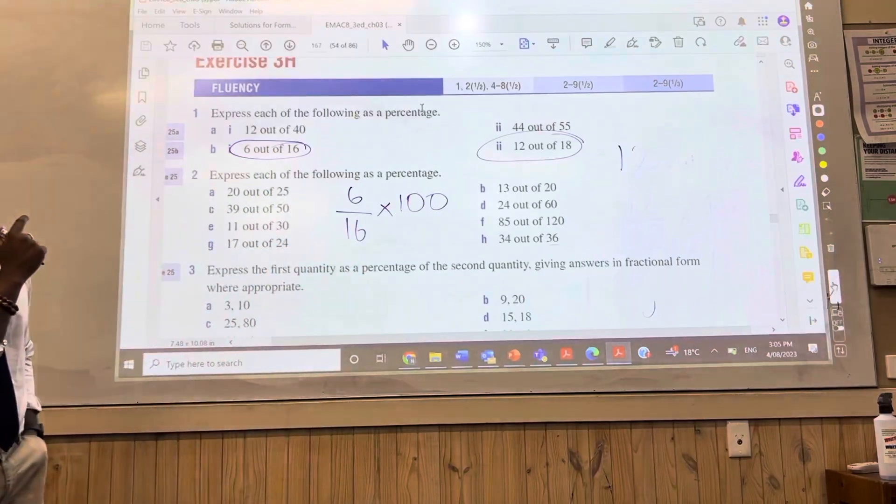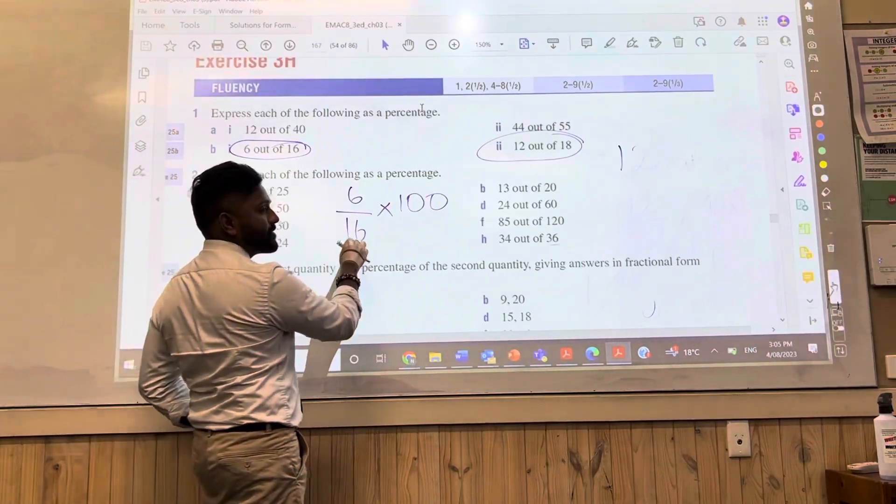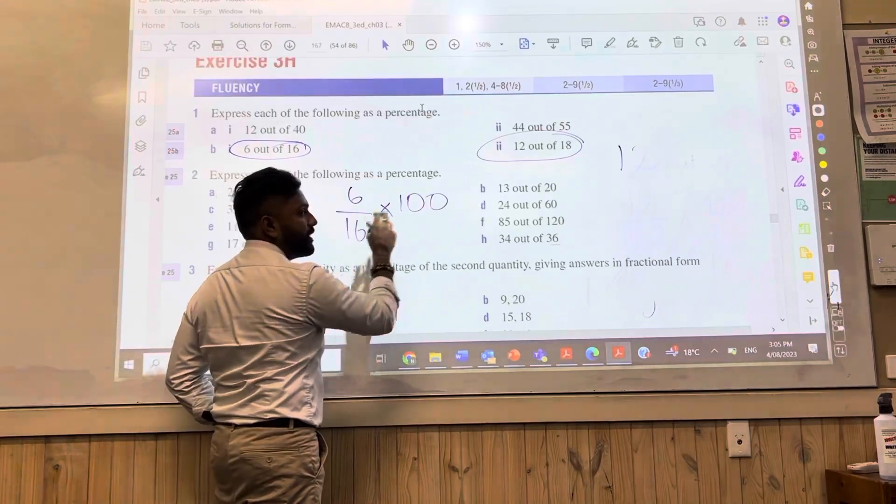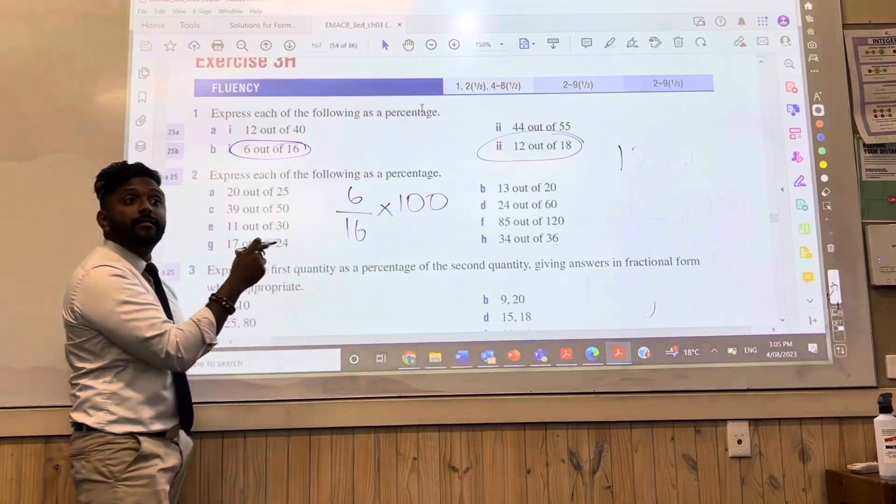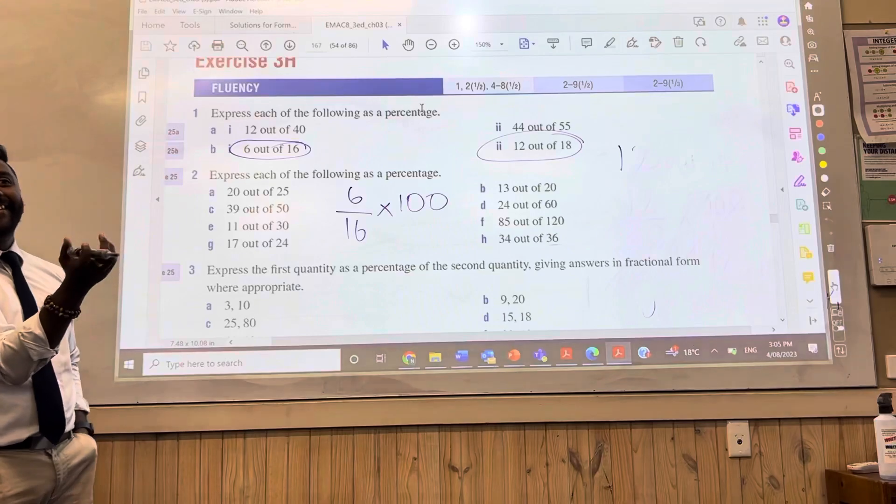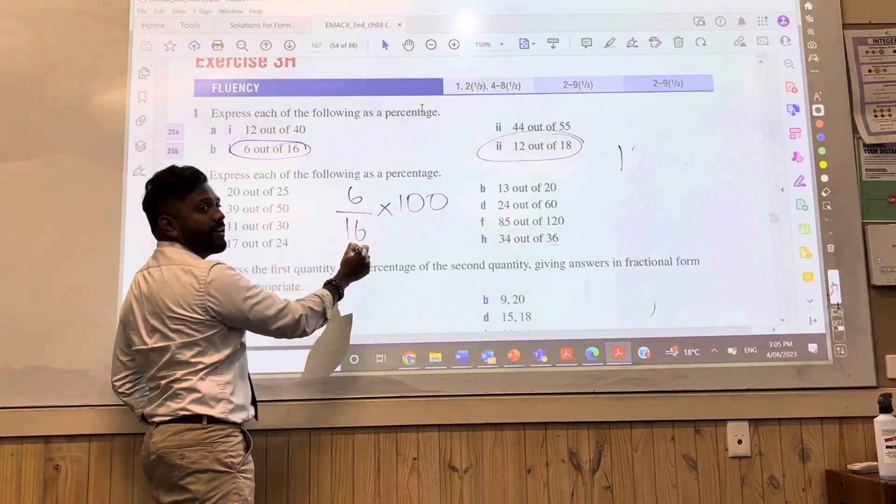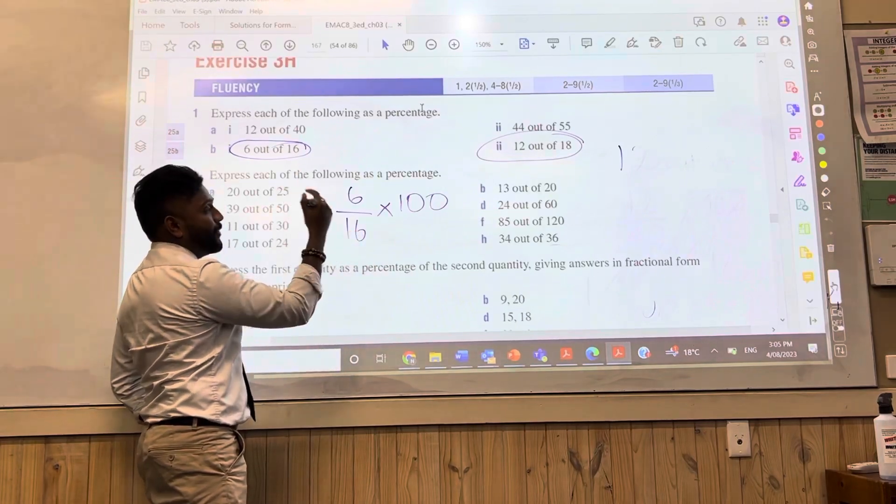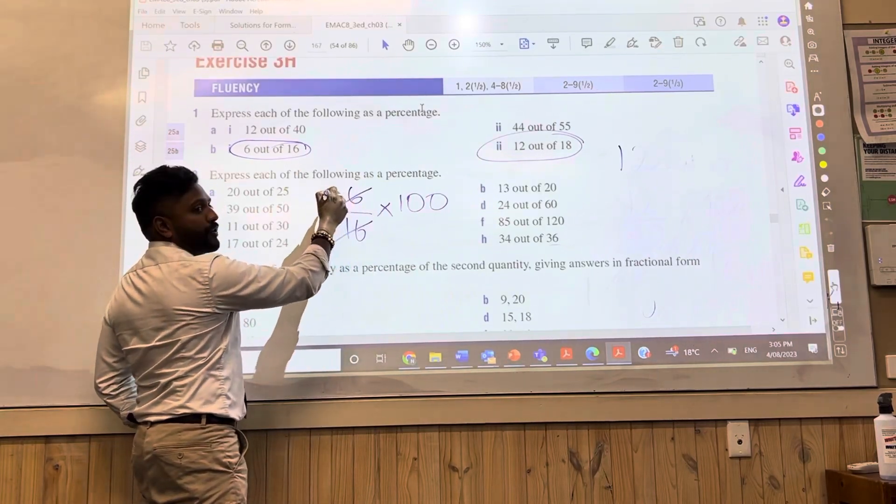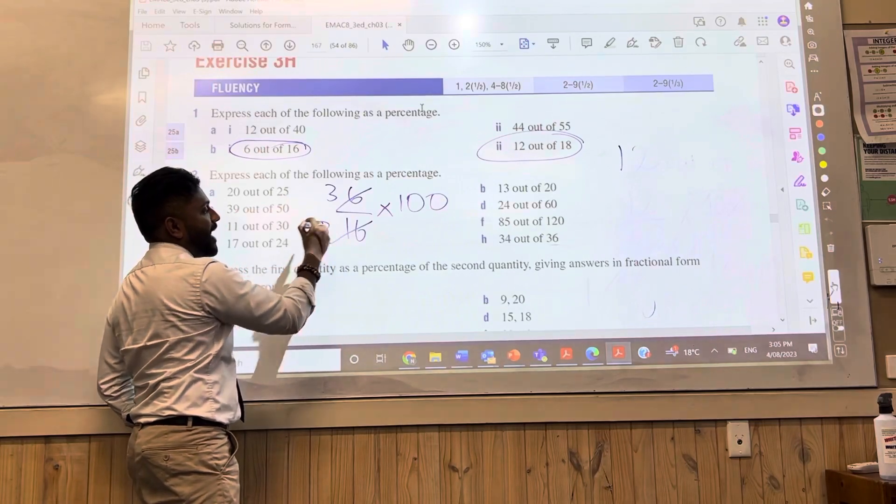How do we simplify this, Lucas? Could we have something in common here and here or here and here? There's quite a few, isn't there? 6 and 16. What can they both divide by? 2. 2, yeah. Divide by 2 becomes what? 3. Divide by 2 becomes 8.